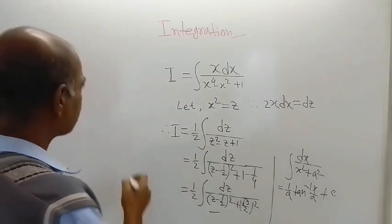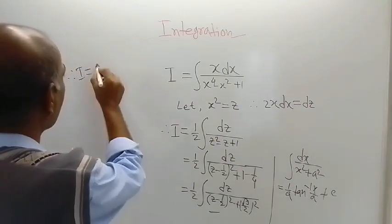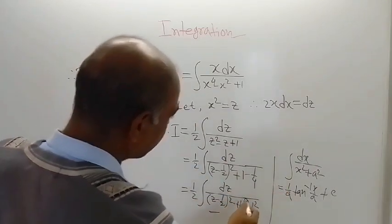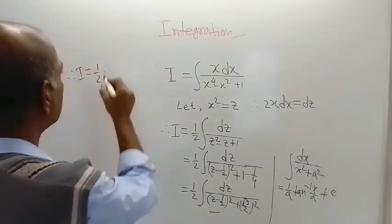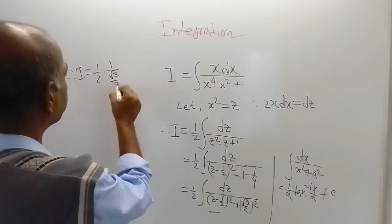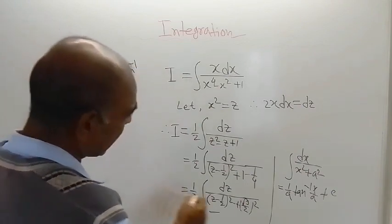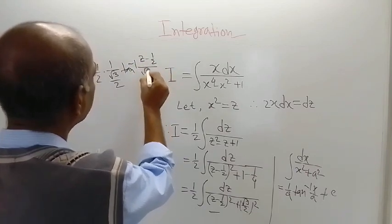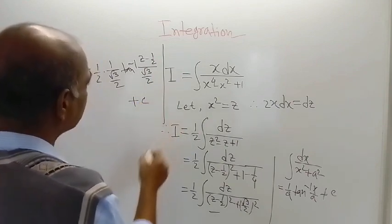Here instead of x, z minus half is there. Therefore, I is equal to half, and then 1 by a. a is root 3 by 2 for this given problem. So 1 divided by root 3 divided by 2, and then tan inverse z minus half divided by root 3 by 2, plus a constant of integration c.